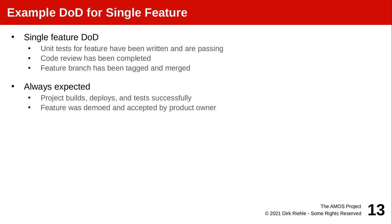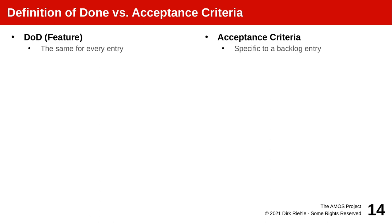You need definitions of done for these different levels. You can see this in the planning documents where you can document the DoD for different levels. For a single feature, it could be something like: unit tests have been written and passing, code review was done — there was always a sign-off by another person, and so forth. Really make sure that you don't confuse definition of done with acceptance criteria. The DoD for a feature is the same for every feature — you cannot and should not vary it, while acceptance criteria are necessarily specific to that backlog entry.